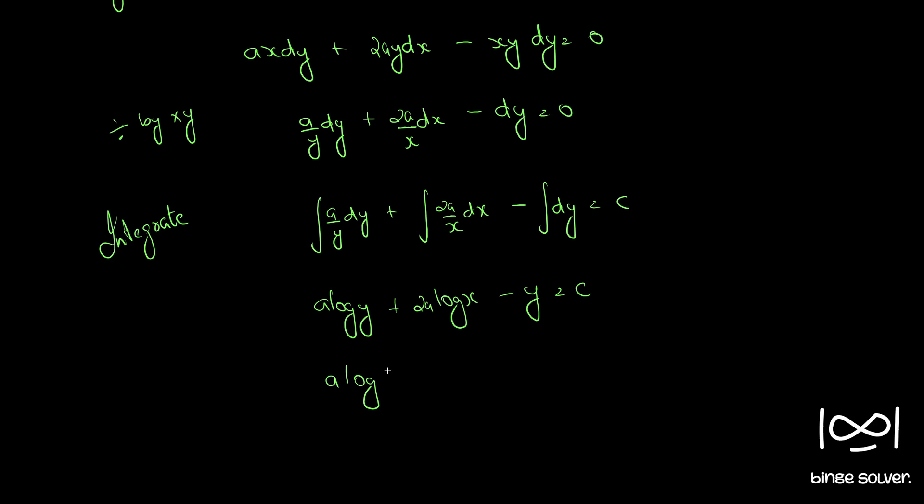We can now write this as a log(y x²). So we just take 2 inside as x², and we use the property log a plus log b equals log ab. So minus y equal to c. So this is the solution.